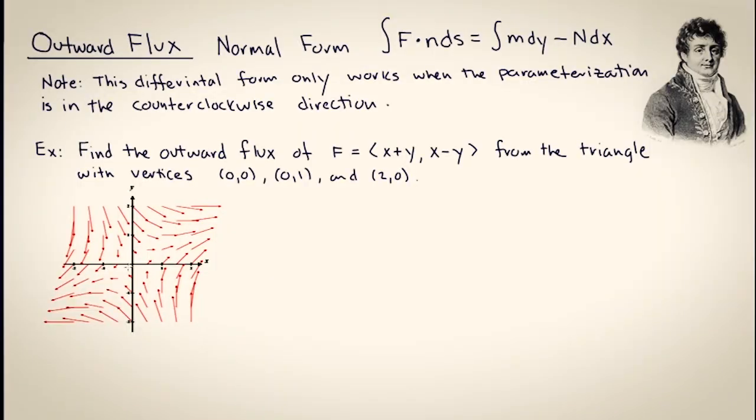We're going to calculate the outward flux of this vector field around this triangle. The flux corresponds to projecting the vector field onto the outward normal vector of the region. This represents the total rate at which the vector field is exiting the region.